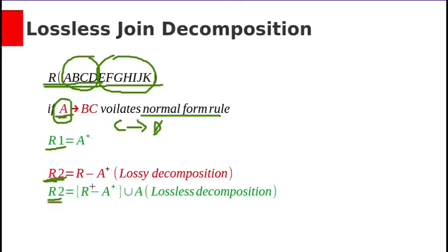So we need to include this A in relation R2. So R2 should be R minus closure of A union A. We need to add the key of the first relation in the second relation. Non-key attributes of relation 1 should be removed from the original relation. So this kind of decomposition will be lossless decomposition.